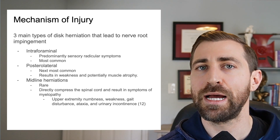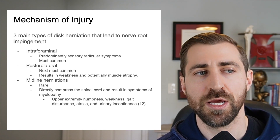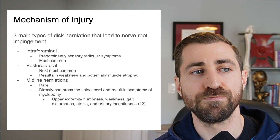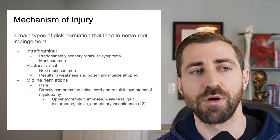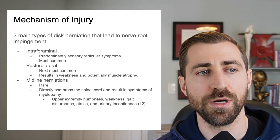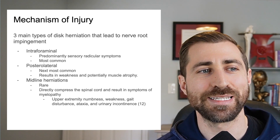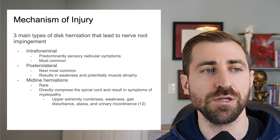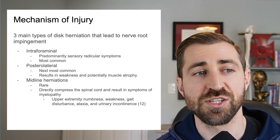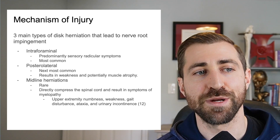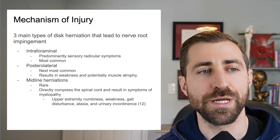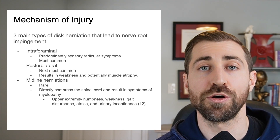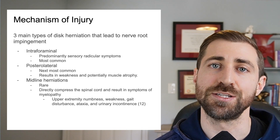Lastly, you can have midline herniations, and these are usually more rare. They tend to directly compress the spinal cord and result in symptoms of myelopathy — a more serious condition. This leads to upper extremity numbness, weakness, gait disturbances, ataxia, and urinary incontinence.